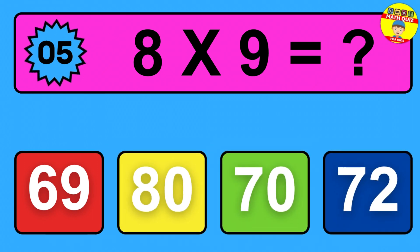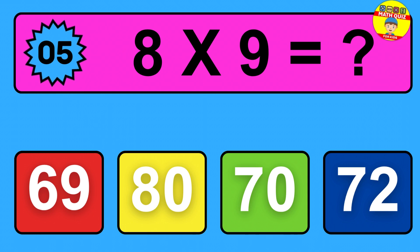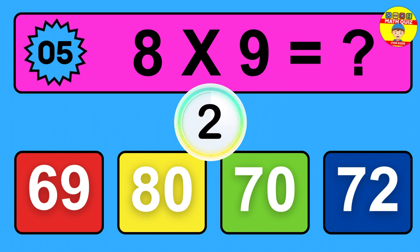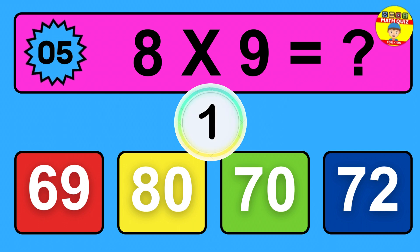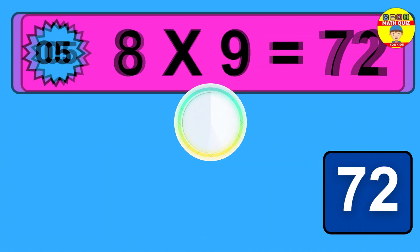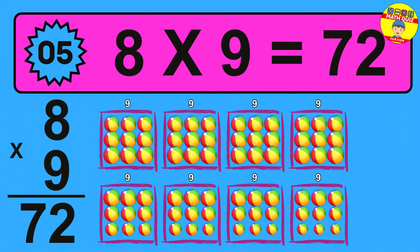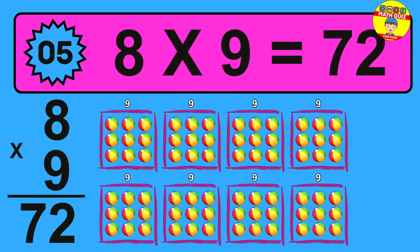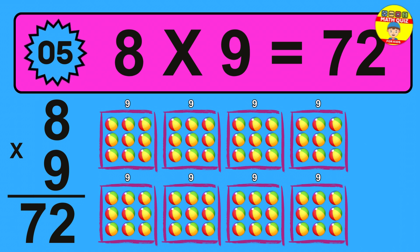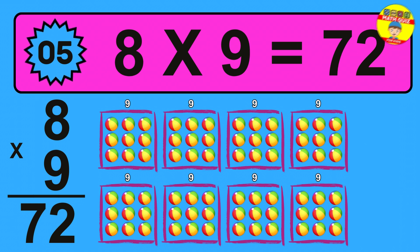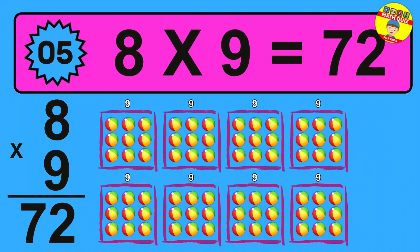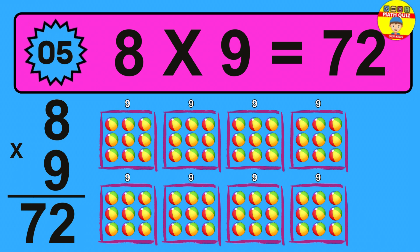Question 5: 8 times 9 equals what? The answer is 8 times 9 is 72. To calculate, we have 8 groups with 9 balls each one. So how many balls do we have? 72 balls.